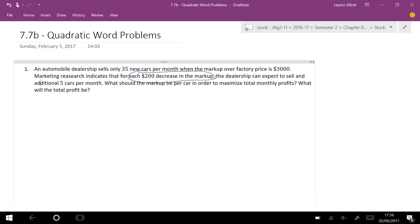This is a similar type of problem where I know that normally if I look at how much money this thing is making, I'll call that revenue. Normal revenue would just be 35 new cars per month, and the markup is $3,000. So that's how much they normally make.